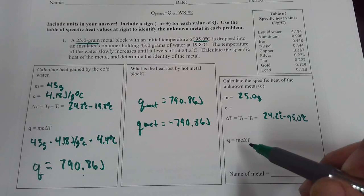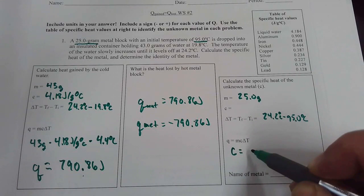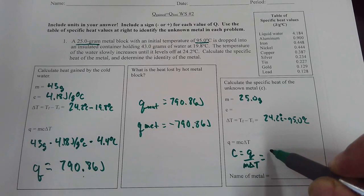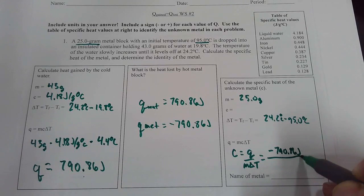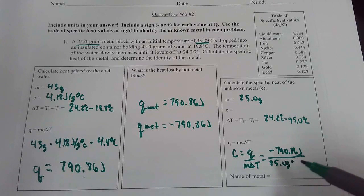To solve for this, we're going to say C is equal to Q over M delta T.